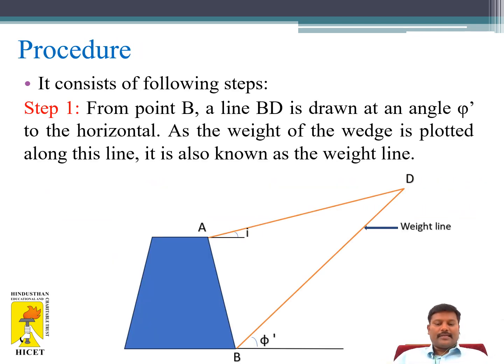Procedure for Cullman's graphical method consists of following steps. The picture shows the retaining wall to retain the soil mass on one side, and AB is your inclined face of the retaining wall.